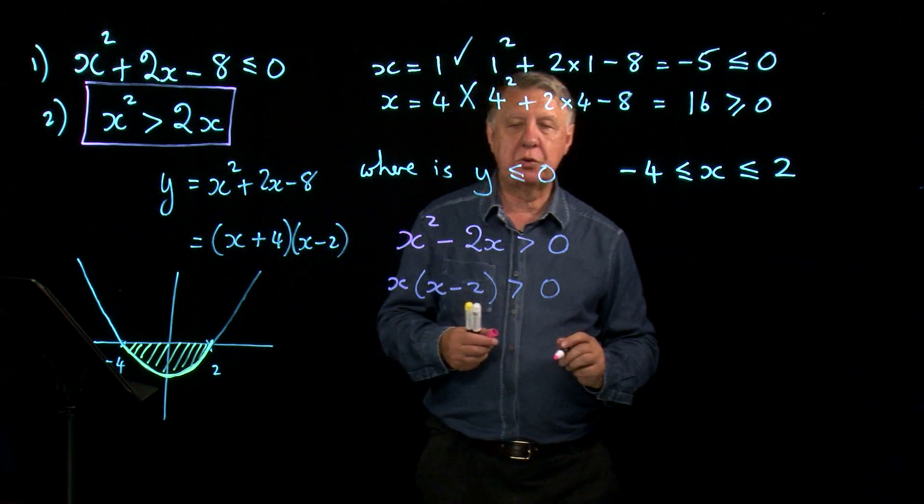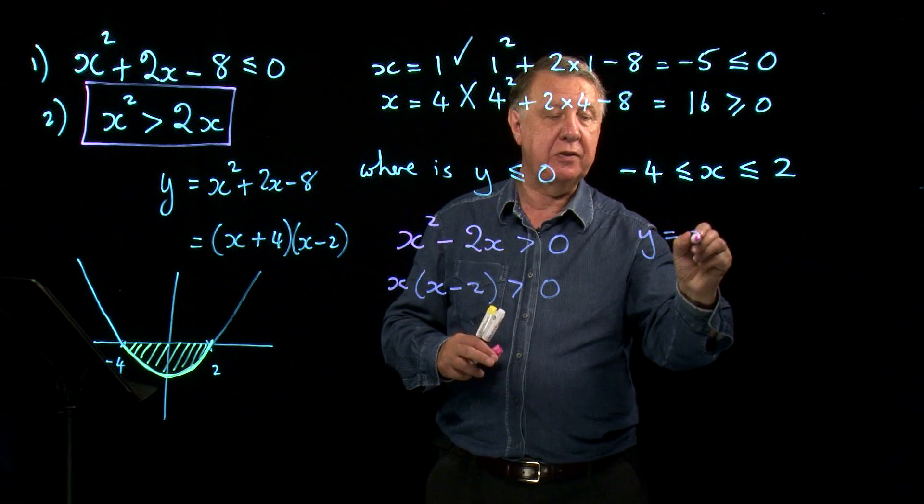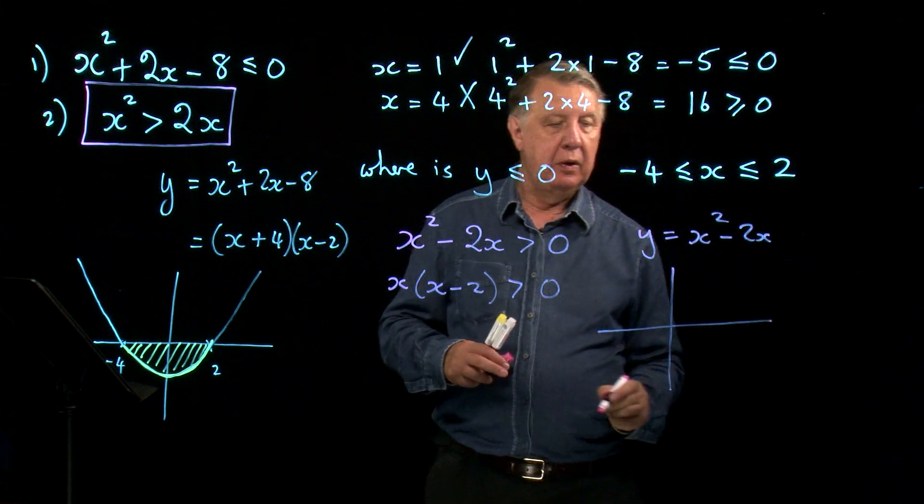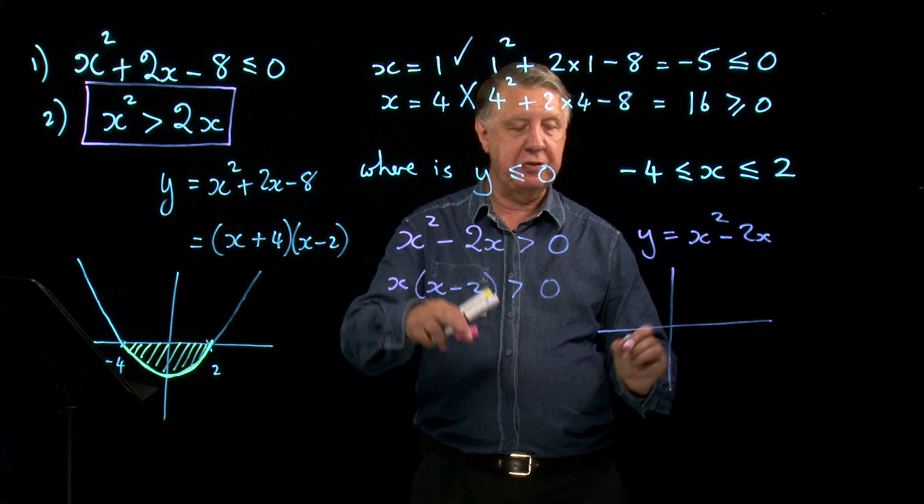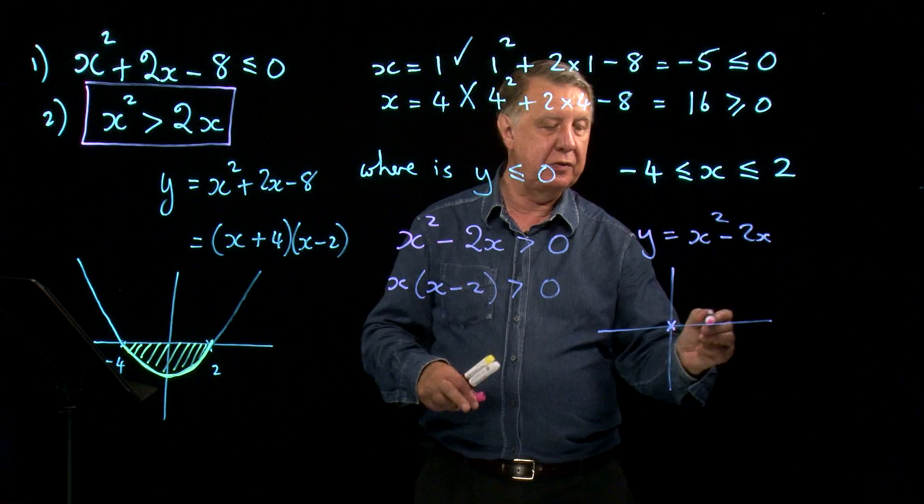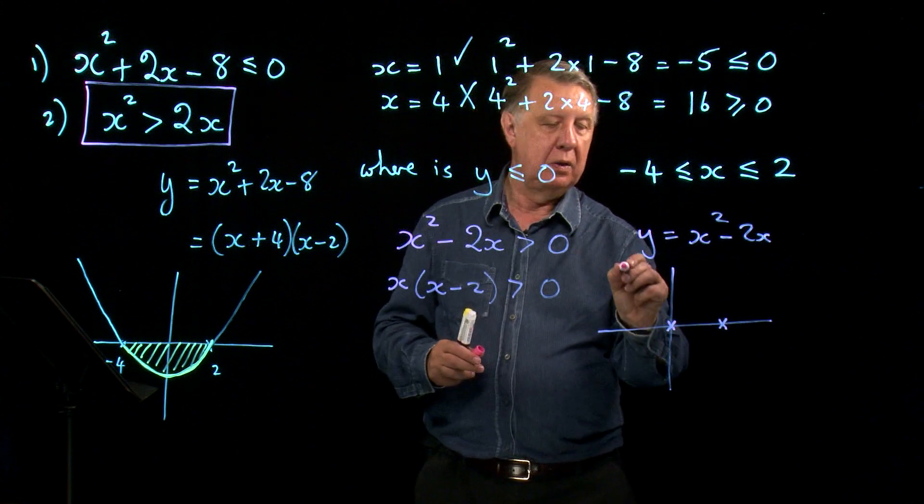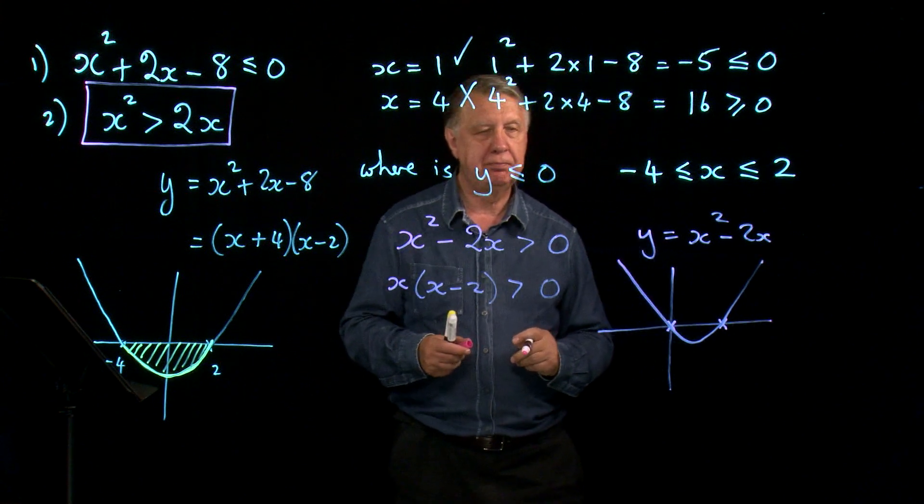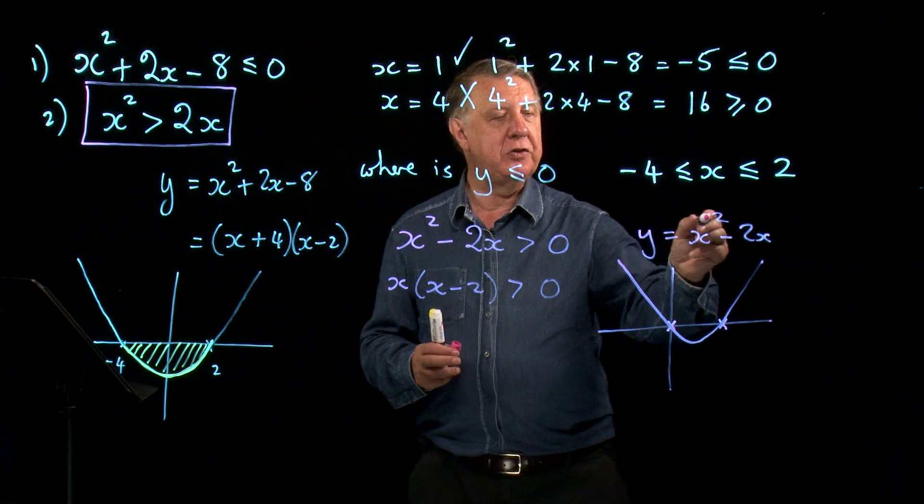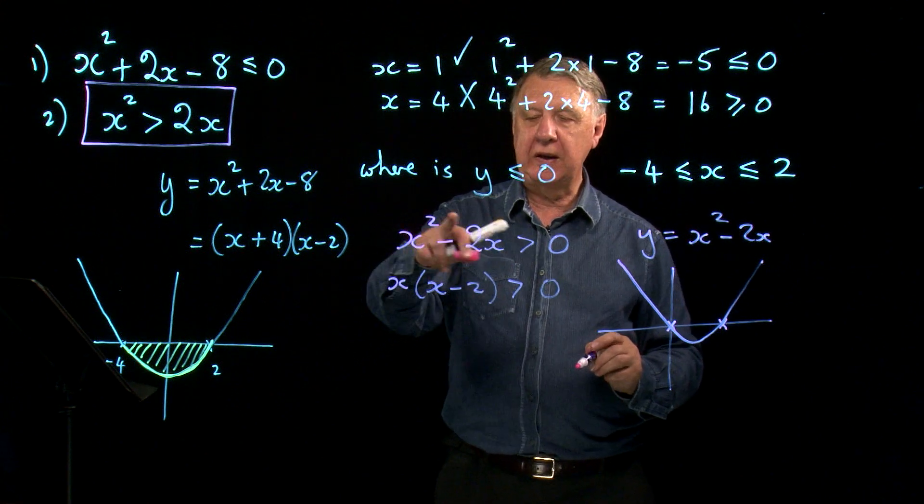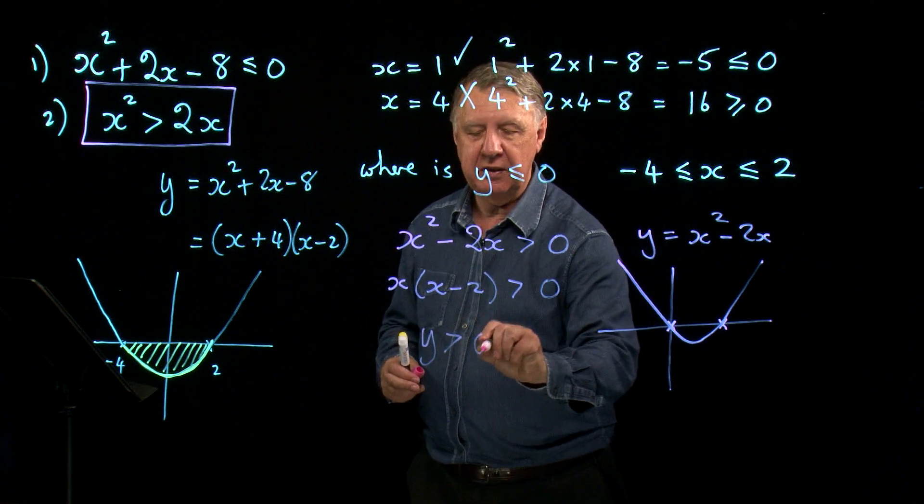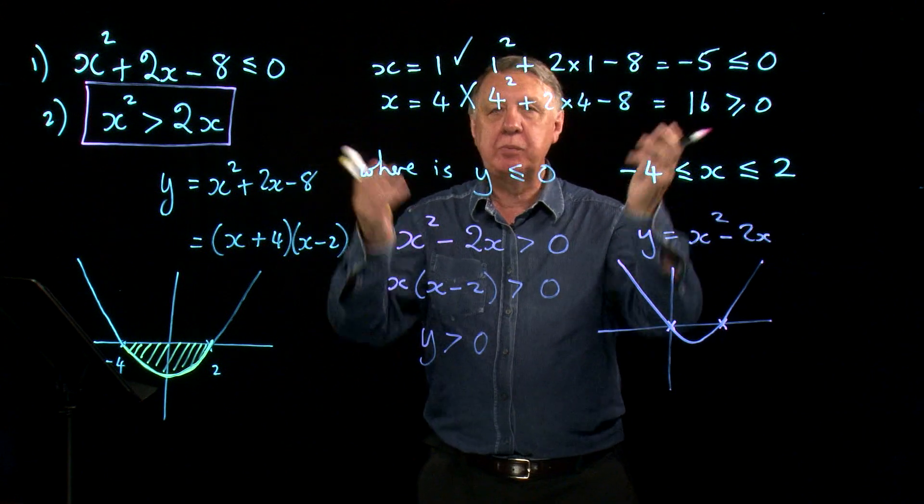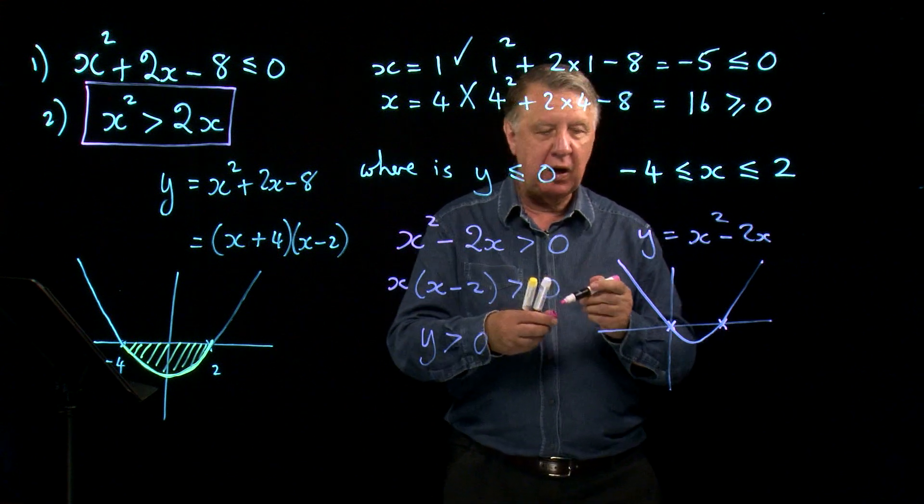Let's draw the graph of y equals x squared minus 2x. Because of the factors here, it goes through 0 and it goes through 2. So the graph will look like that. This time, because y is this, what does this say? It says that y is greater than 0. What does greater than mean? It means above, above 0.